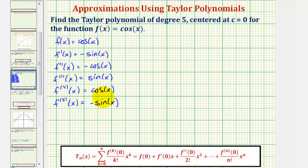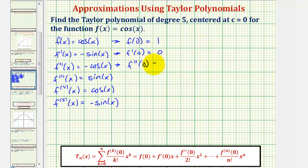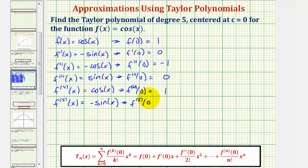Now we'll evaluate each of these functions at zero. f of zero equals cosine zero, or one. f prime of zero equals negative sine zero, which is zero. f double prime of zero equals negative cosine zero, or negative one. f triple prime of zero equals sine zero, or zero. And the fourth derivative at zero equals cosine zero, which is one.